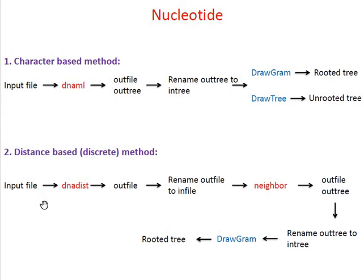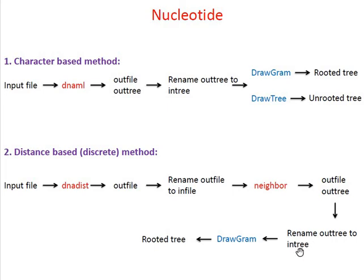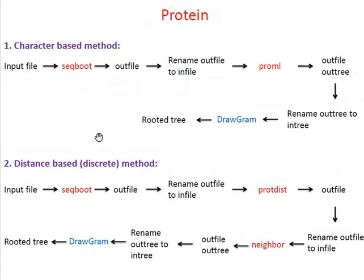Similarly, the input file is taken by the DNA Dist program under the distance-based method, and it will give you one file named outfile. You have to rename this outfile as 'infile,' and then this infile is used as input for the next program, which is Neighbor. This processing step gives you outfile and outtree files. Once again rename the outtree file as 'intree,' which is input for DrawGram, and it will give you a rooted tree.